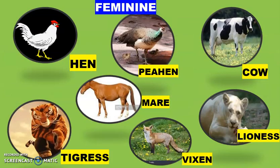Then we have feminine gender for those which we have seen previously: hen, peahen, cow, mare, tigress, vixen, lioness. All these are the feminine gender of animals.